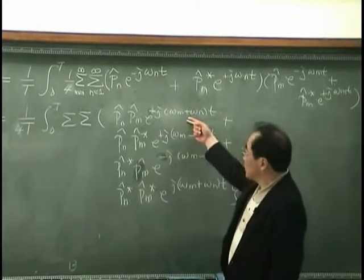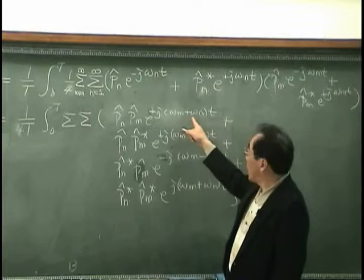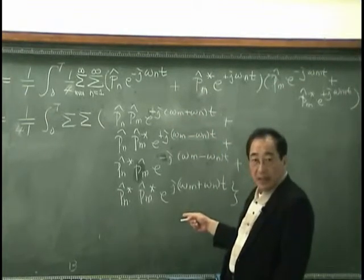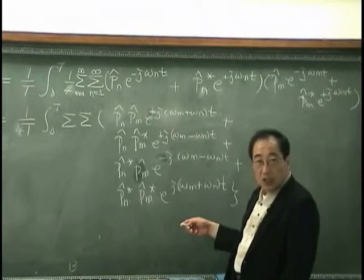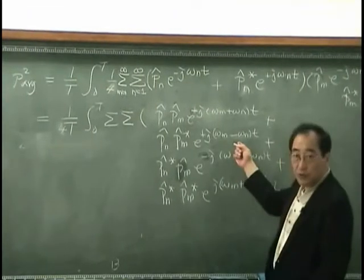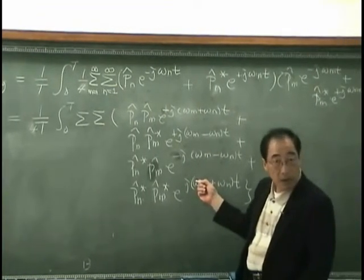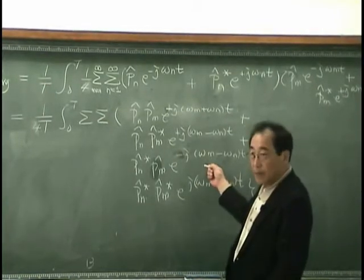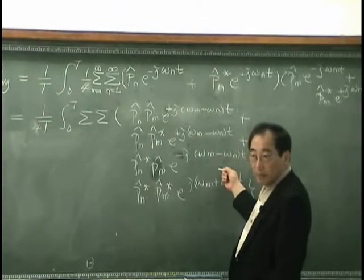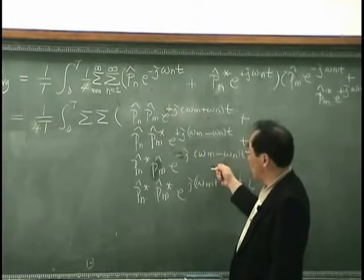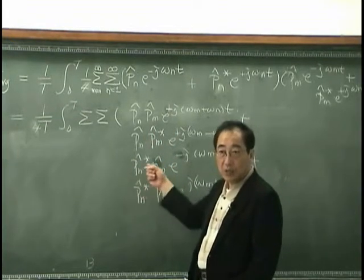These two terms are oscillating with frequency omega_m plus omega_n, and that is oscillating faster than the frequency omega_m minus omega_n. Also, this one has a maximum when omega_m equals omega_n, and when omega_m equals omega_n, this one is |Pm| squared, and that is |Pm| squared.